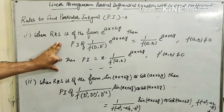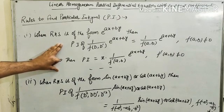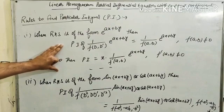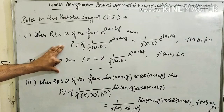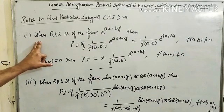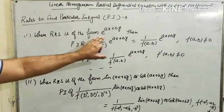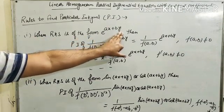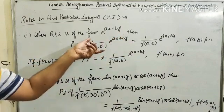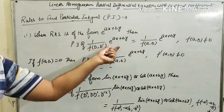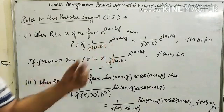I have written two rules to find the particular integral, and we will discuss only these two rules in this lecture. The first method is when the right-hand side is of the form e raised to the power ax plus dy. Then we compute 1 upon f(D, D') of e raised to power ax plus dy, where D stands for del over del x and D' stands for del over del y.